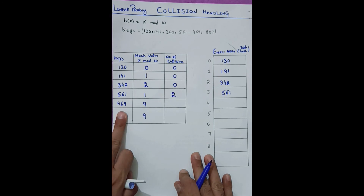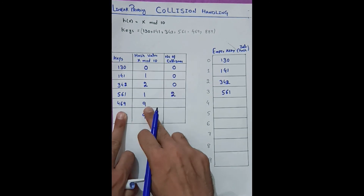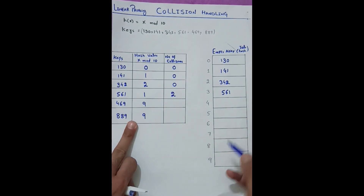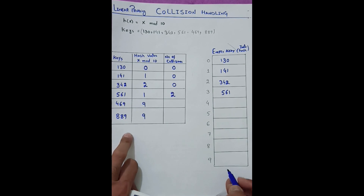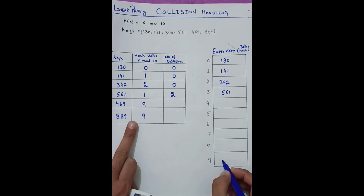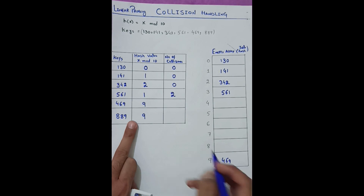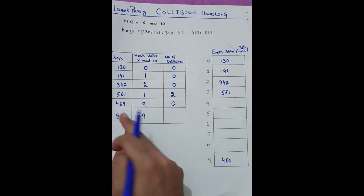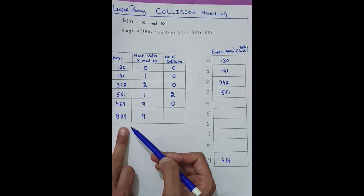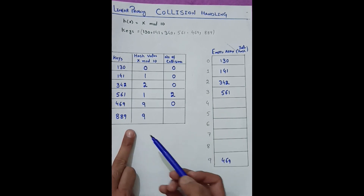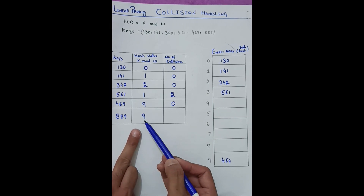For 469, its mod is 9 and index 9 is empty, so we place 469 at index 9 with no collision.